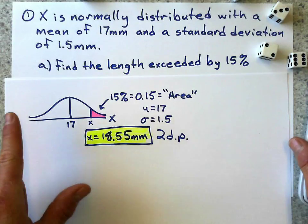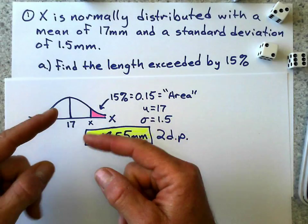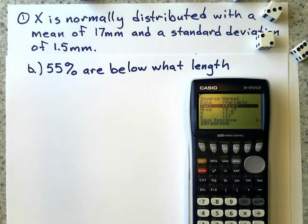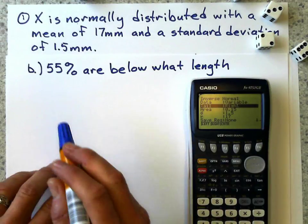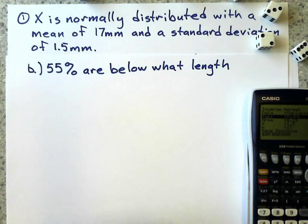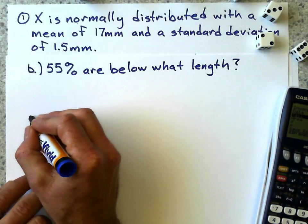So that's one that's tail right. And of course, it could be tail left, and it could be central as well, like the central 30%, or the interquartile range would be the central 50%. So I'll do another example. Let's try this one now. We've got 55% are below what length? And first, we'll draw a pretty picture.